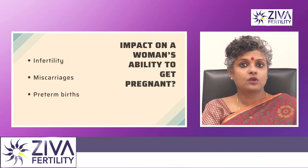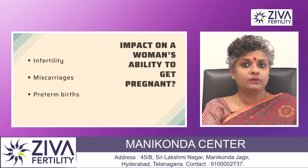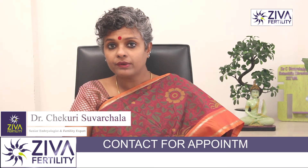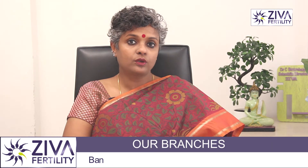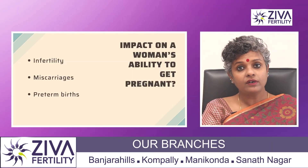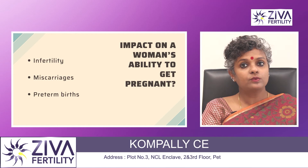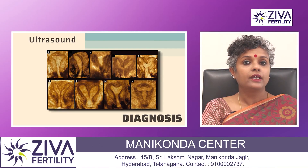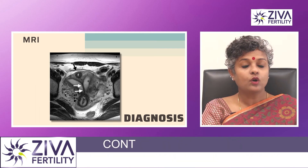How do Mullerian duct fusion disorders impact a woman's ability to get pregnant? Women with fusion disorders have ovaries that function normally, so they develop breasts, external genitalia, and pubic hair, and can also get pregnant. They experience no physical discomfort or difficulties engaging in sexual intercourse. However, women with fusion disorders are more likely to have miscarriages and preterm births. Difficulties with pregnancy depend on the specific fusion disorder present. The only way to diagnose a fusion disorder is through ultrasound, MRI (magnetic resonance imaging), or a surgical procedure.